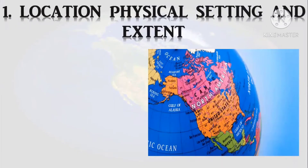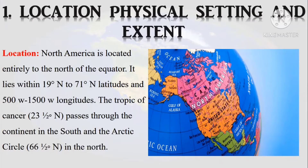Now let's learn about location, physical setting and extents. North America is located entirely to the north of the equator. It lies within 19 degrees north to 71 degrees north latitudes and 50 degrees west to 150 degrees west longitudes. The Tropic of Cancer passes through the continent in the south and the Arctic Circle in the north.